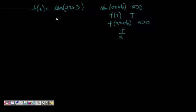Hence, we can simply write that sine 2x plus 3, the period is 2 pi by 2, which is pi. So its period is pi.